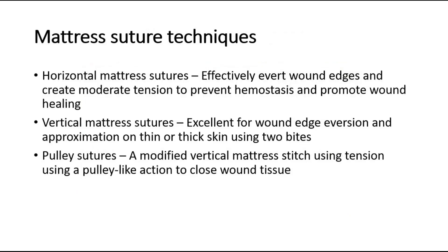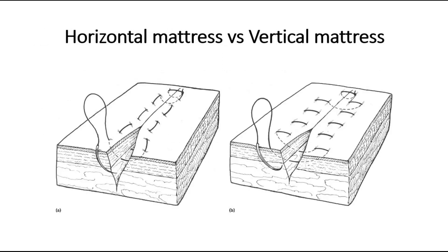The last group is the mattress suture techniques. Horizontal mattress sutures effectively evert wound edges and create moderate tension to prevent hemostasis and promote wound healing. Vertical mattress sutures are excellent for wound edge eversion and approximation on thin or thick skin using two bites. And pulley sutures is a modified vertical mattress stitch that uses a pulley-like action to close wound tissue. In this picture, you can see the difference between horizontal and vertical mattress sutures.